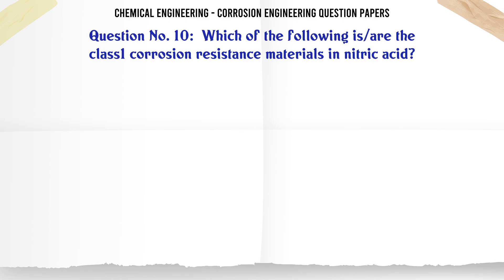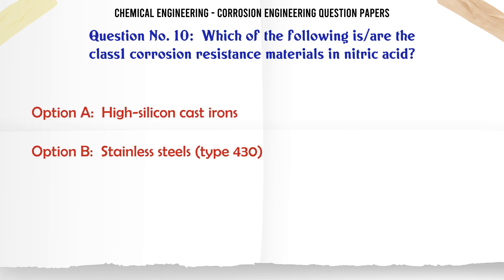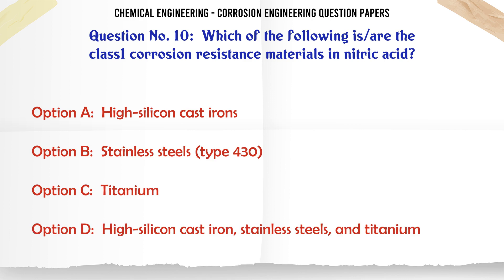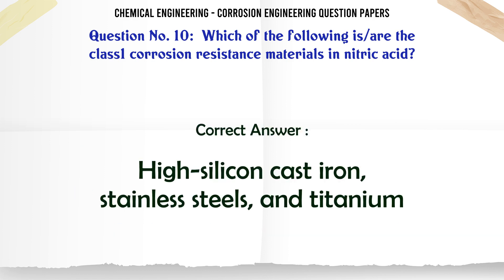Which of the following is/are the class 1 corrosion resistance materials in nitric acid? A. High silicon cast irons. B. Stainless steels type 430. C. Titanium. D. High silicon cast iron, stainless steels, and titanium. The correct answer is: High silicon cast iron, stainless steels, and titanium.